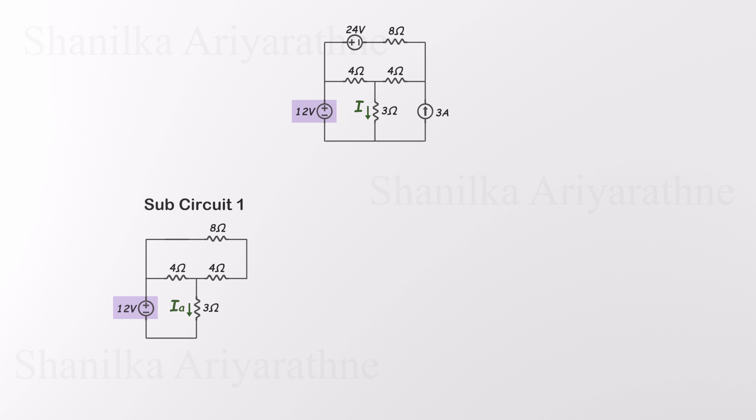Let's call the current through the 3-ohm resistor in this setup IA. Now let's do the same thing, but this time we'll activate the 24-volt voltage source and deactivate the other two. Just like before, the other voltage source becomes a short circuit, the current source becomes an open circuit. That gives us another simplified sub-circuit, now powered only by the 24-volt source. We'll call the current through the 3-ohm resistor in this setup IB.